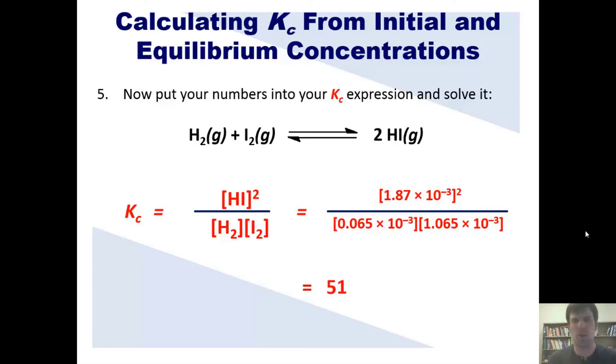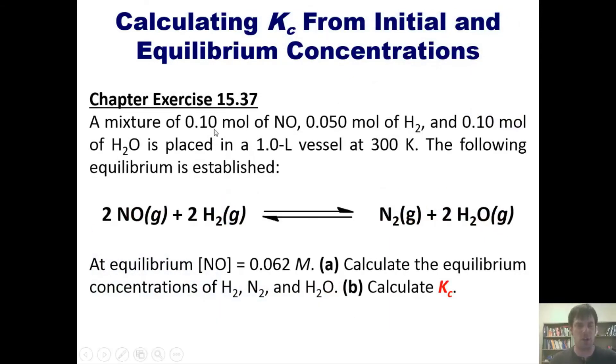I'm going to leave you then with some beautiful problems. The first says a mixture of this many moles of NO, that many moles of H2, and that many moles of H2O is placed in a one liter vessel at 300 K. The following equilibrium is established. At equilibrium, the concentration of NO is this. Calculate the equilibrium concentrations of these species, and then calculate Kc. I'm not going to show you how to do that in this video right here, but I will give you the hint that you have to do it using an ICE table, as I just illustrated with the previous example. If you'd like, you can pause the video here and attempt to do it on your own.